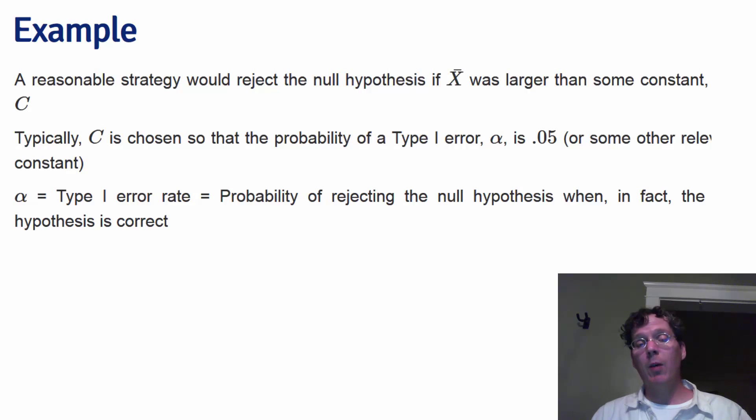So to repeat, alpha is the type 1 error rate, which in other words is the probability of rejecting the null hypothesis when in fact the null hypothesis is correct, a bad thing. We don't want to make these kinds of mistakes.